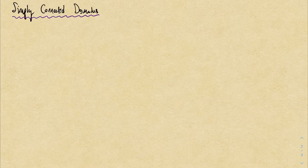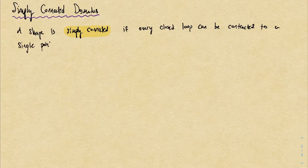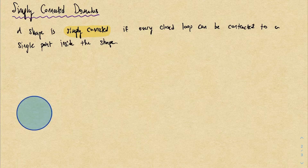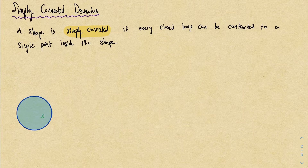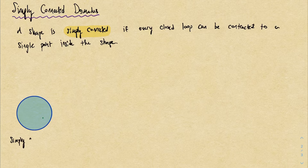Here's the definition: a shape is simply connected if every closed loop that you draw in the shape can be contracted to a single point. For example, here's a disk. Draw a random closed loop — can we take this loop and shrink it to a point, doing so entirely within the shape? Yes: just make the loop smaller and smaller until it shrinks to a point. You can do this with all possible closed curves, so there's no obstruction. Therefore, this shape is simply connected.